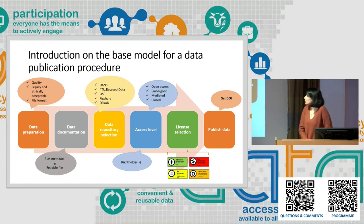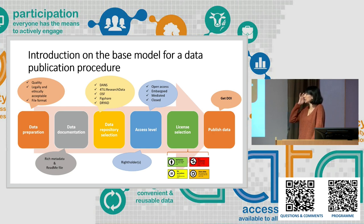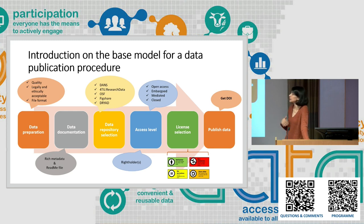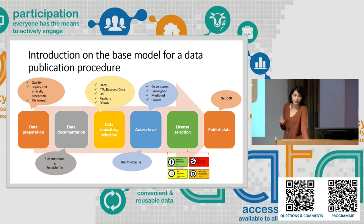Here you can see the base model for publishing data that researchers currently follow with support from data stewards. They prepare data in an open file format, make sure there are no legal or ethical issues, document their data and prepare metadata and a README file. Then, with support from the data store, they choose a data repository, define an access level and license, publish their data, and get a DOI.